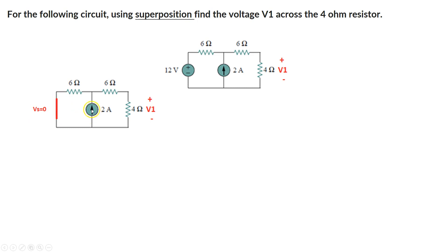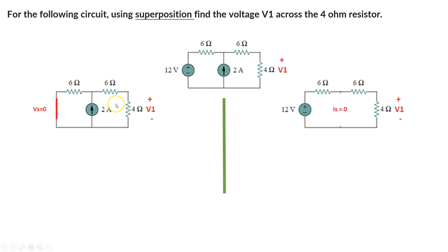We have the current source right here. The current source is coming in at this node, and by Kirchhoff's current law, some current goes one way and some goes the other. The 6 ohm and 4 ohm are in series with each other, so the right-hand side of the 2 amp source is 10 ohms and the left-hand side is 6 ohms. We can apply the current divider formula to calculate the current going through the 4 ohm side.